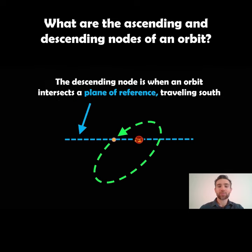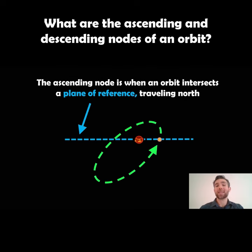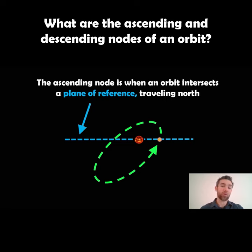The descending node is where the orbit intersects the plane of reference while the body is traveling south. This is the one shown here — it goes through the plane of reference in a downward, southward motion. The ascending node is the opposite: this is where it moves through the plane of reference going north.